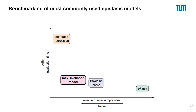The quadratic regression outperformed the maximum likelihood model in terms of quality, but at a much higher evaluation time cost. So in our opinion, the maximum likelihood model is the best compromise between runtime and quality and should hence be used as a default.